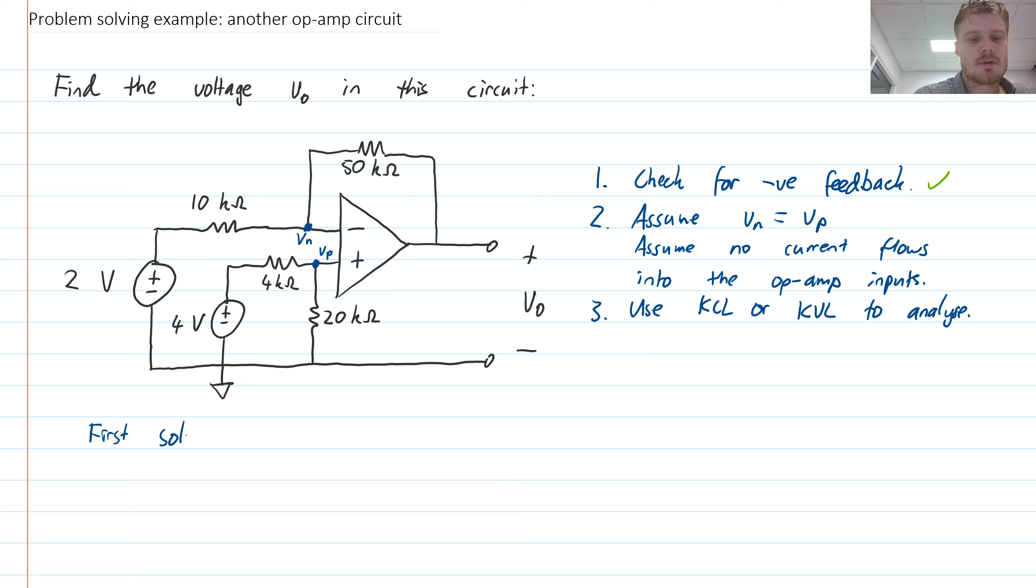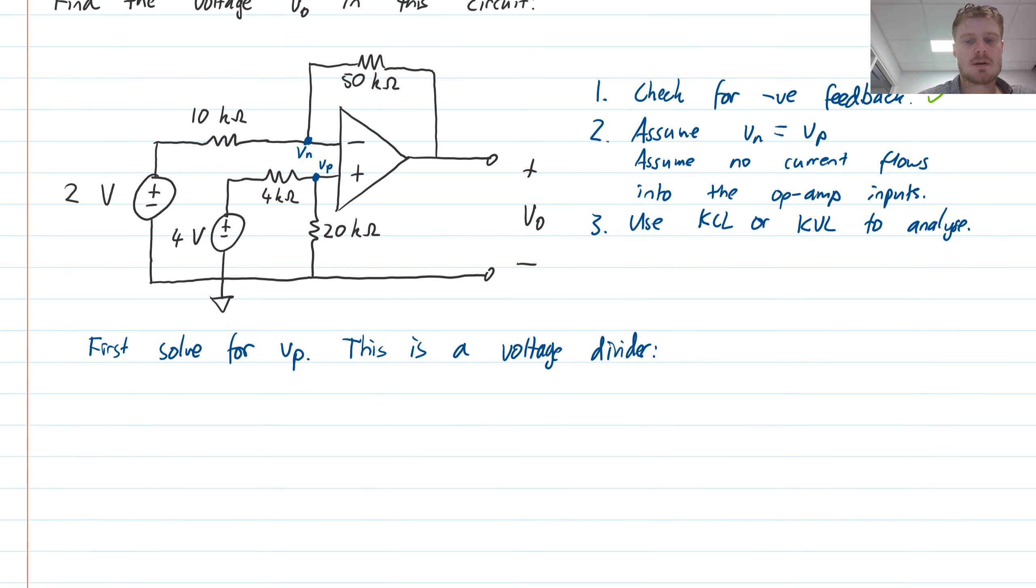So let's do that. First, solve for vp. This is a voltage divider. We can write it straight away that vp will be our input voltage of 4 multiplied by the resistance over which the voltage is measured, so that's 20 kilo ohms divided by the sum of the resistors, which is 24 kilo ohms. If we calculate that, 4 times 20 divided by 24 is 3.333 volts.